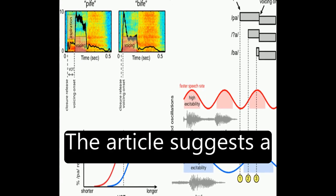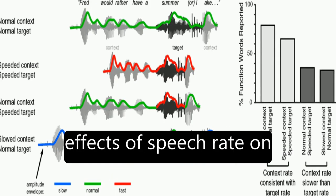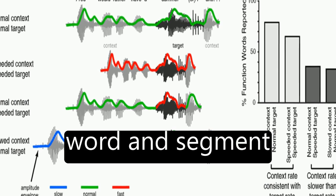The article suggests a framework through which neural entrainment to speech rhythm can explain effects of speech rate on word and segment perception.